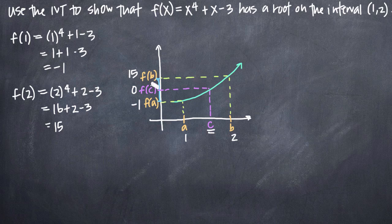So this is how we use the intermediate value theorem to show that there must be a root of the function in between 1 and 2. And we can indicate that just by saying that f(1) < 0,